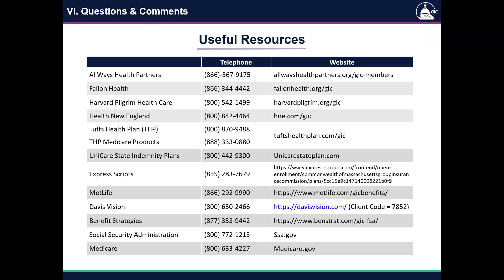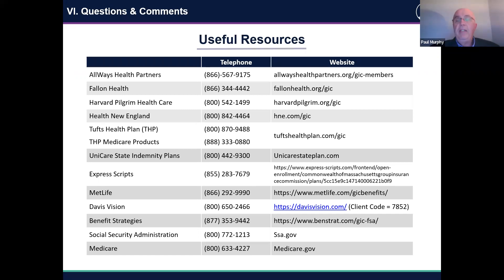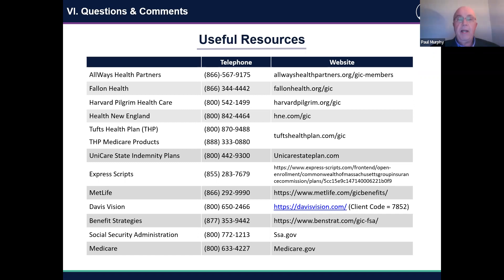Another question: is it possible to change from a single plan to a family plan anytime? Changing from an individual to a family plan — if you have a qualifying event such as birth of a child or marriage, GIC does allow you to change to a family plan. It's a qualifying event and you have 60 days from the birth of a child or marriage to change to a family plan. Thereafter, if you don't do it within 60 days, you can do it during any of our annual enrollment periods.